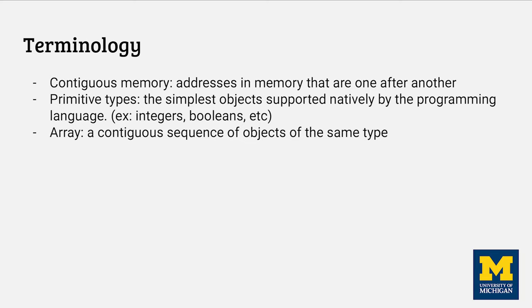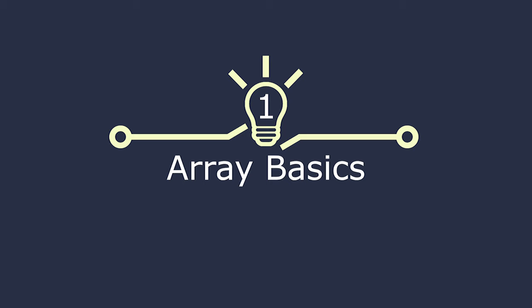Contiguous just means sequential, so contiguous memory refers to a block of memory where addresses are one after another. A primitive type is a basic type that's natively supported by the language that we're using. You can think of it like a building block of data. An array is a contiguous block of memory where we're just storing one type of data. This means that arrays are homogenous.